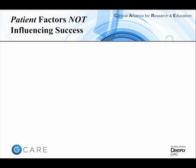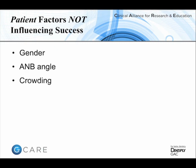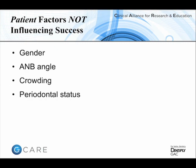What's clear from the literature is that a variety of factors don't appear to affect success: the sex of the patient, how Class 2 or Class 3 they are before treatment, how much crowding they have, their periodontal status provided it's controlled, and whether they have a history of TMD.